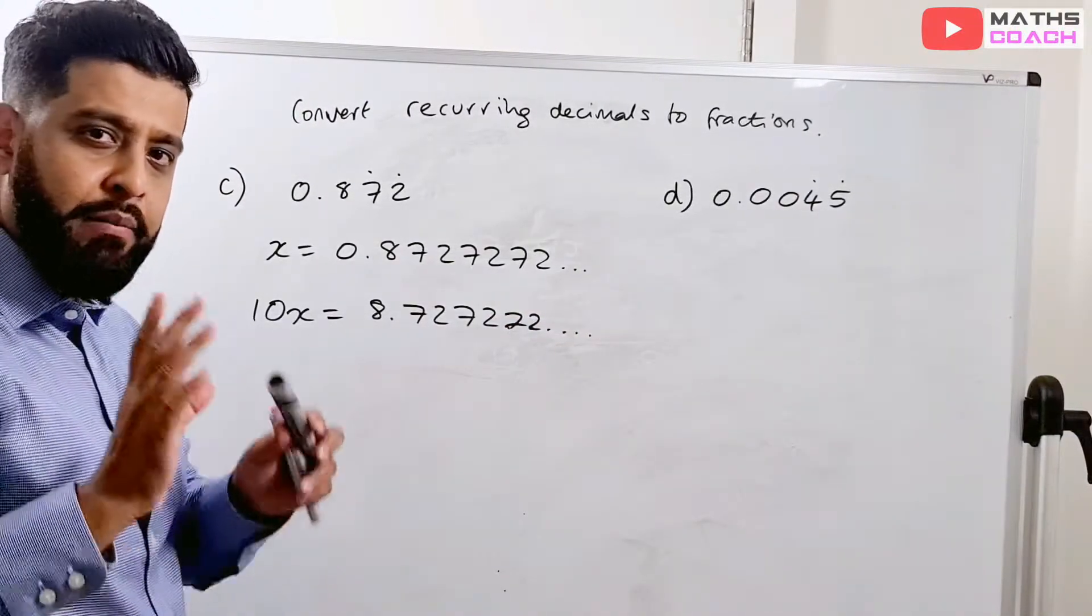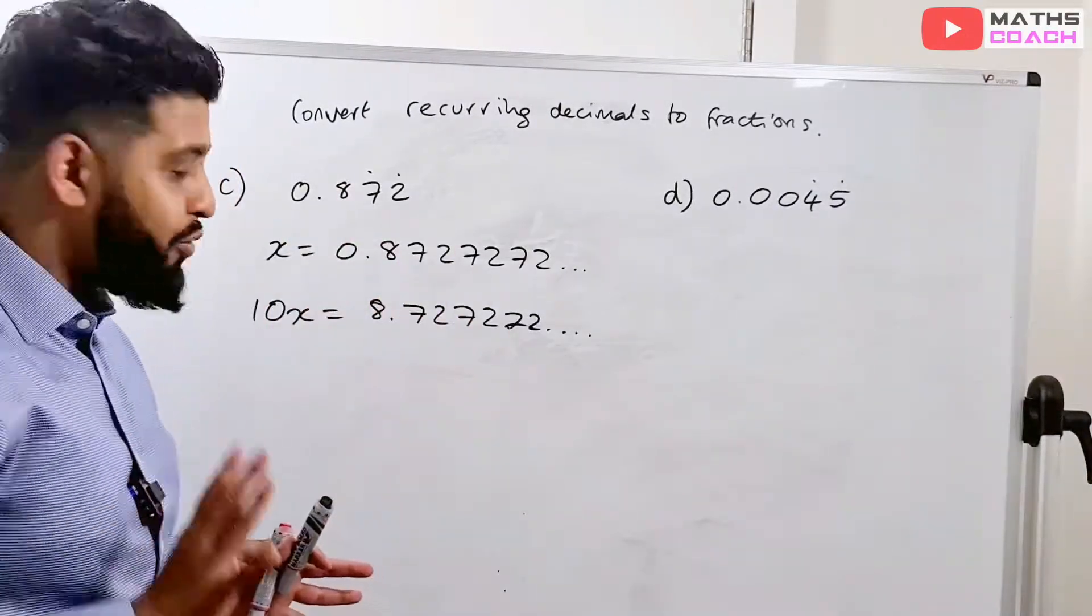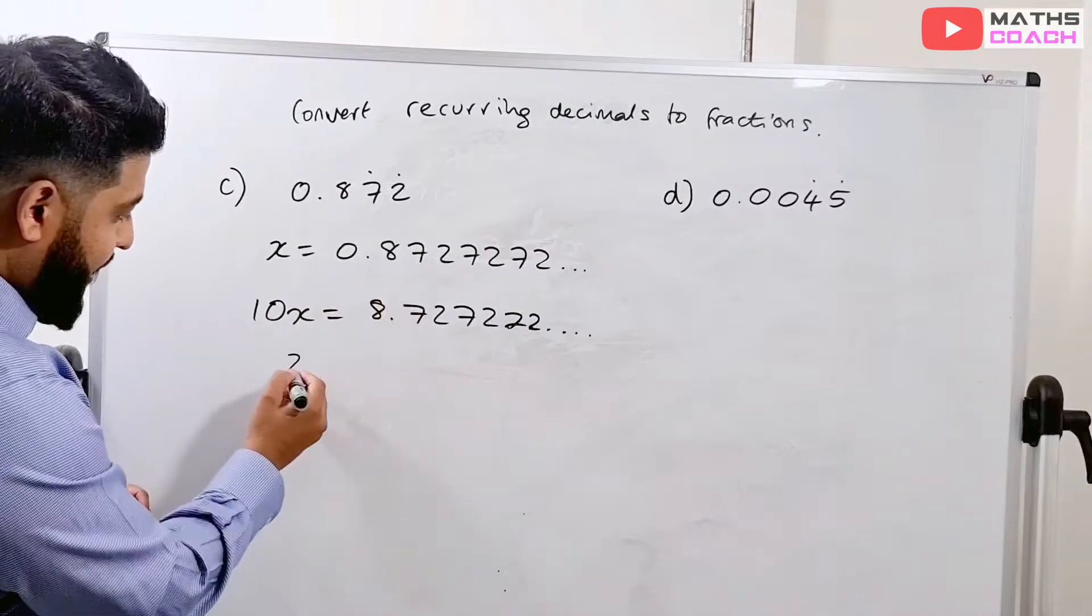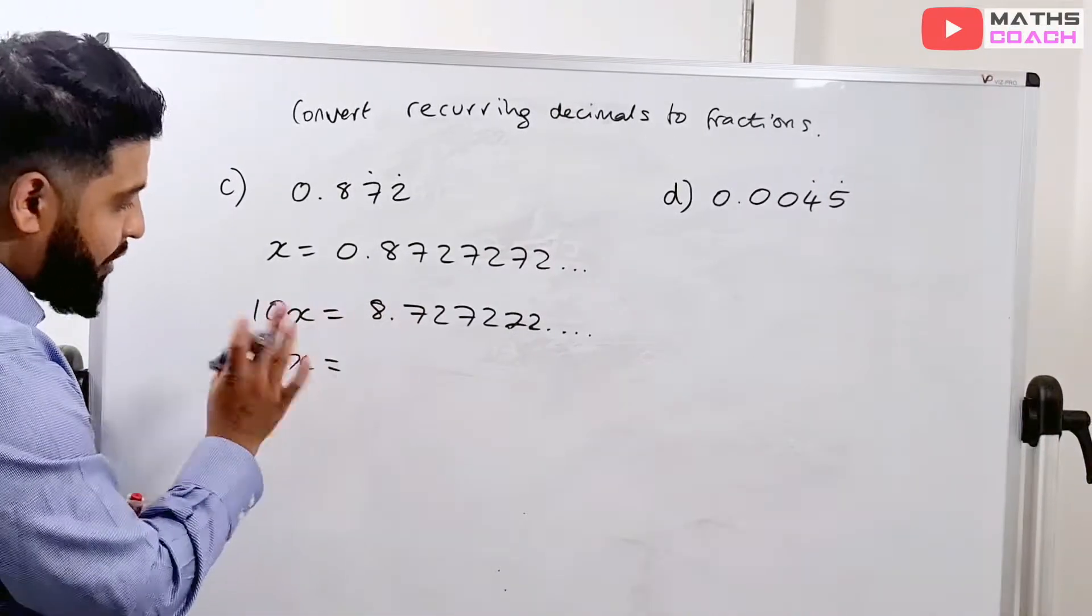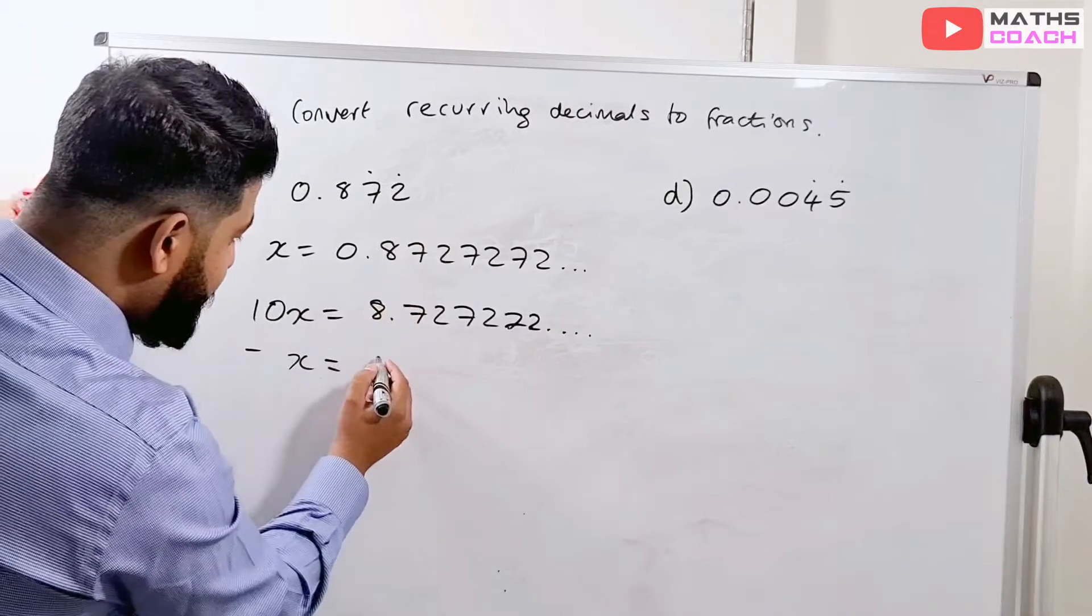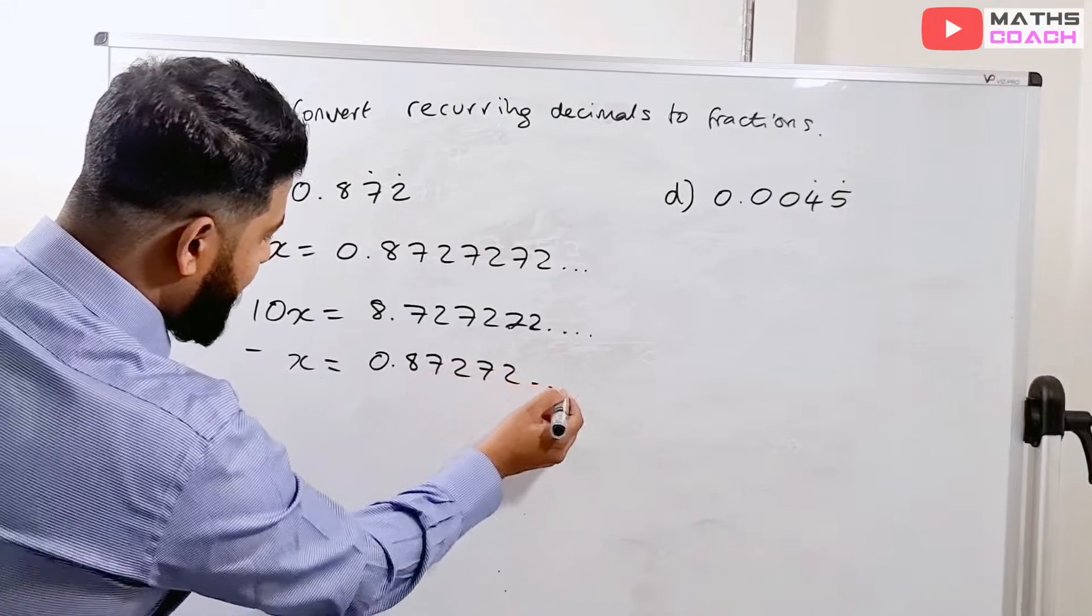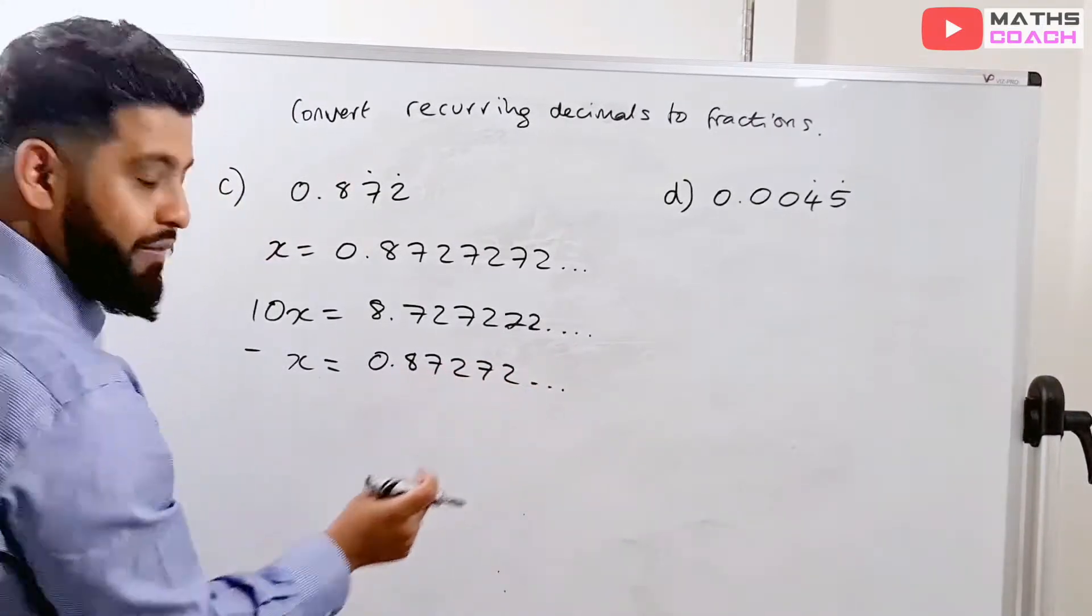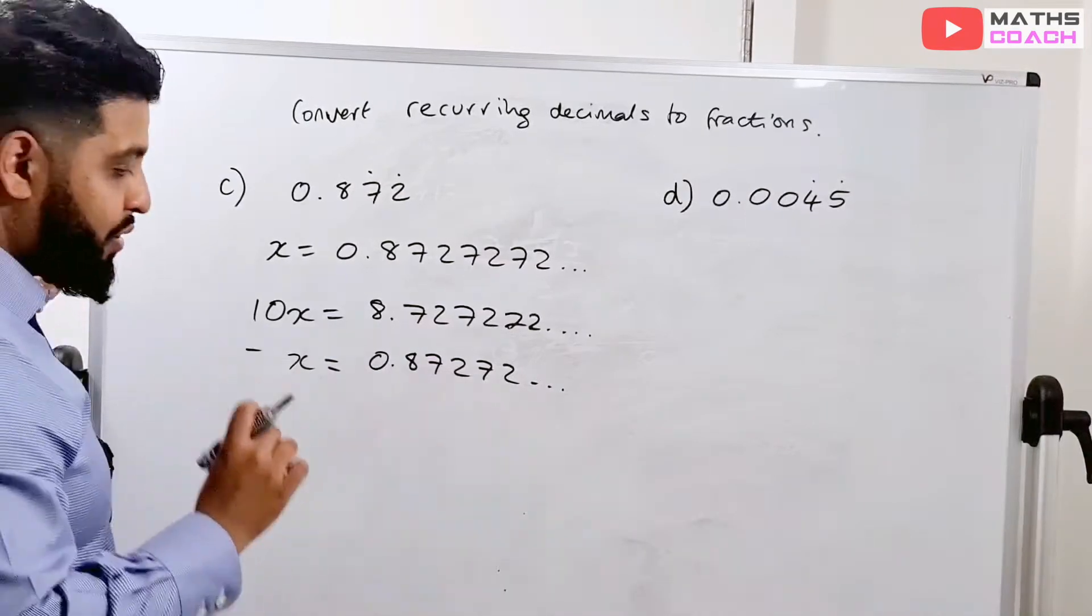Now, I'm sure you encountered a similar problem that I'm facing here. You see, previously, in the last two examples, I brought my x in, right? And I did, you know, 10x or 100x or whatever it was, 1000x, take away x. But this time, can you see the problem? I've got the original x as 8727272. So it's no good for me, the original x.